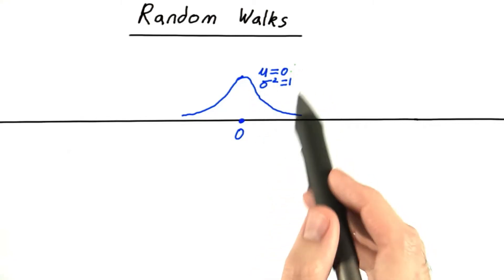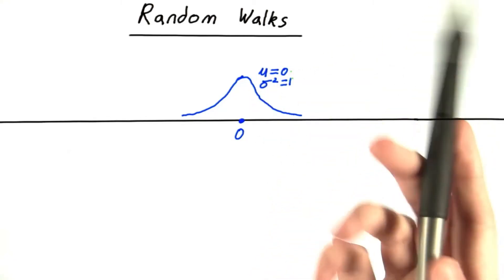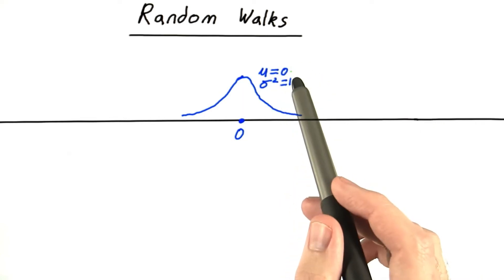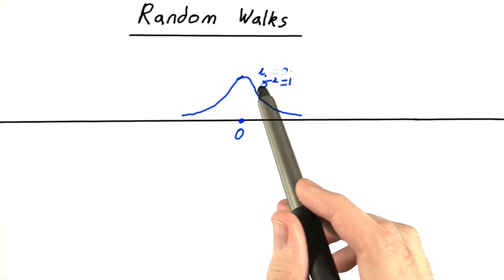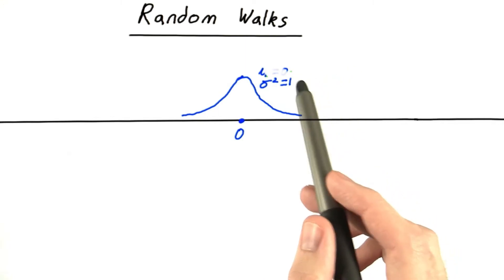Now that you see how this works when mu equals 0, I'd like to change it. When mu is not equal to 0, we call this a random walk with drift, since it tends to drift in one direction or the other.